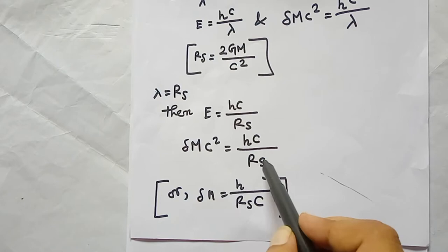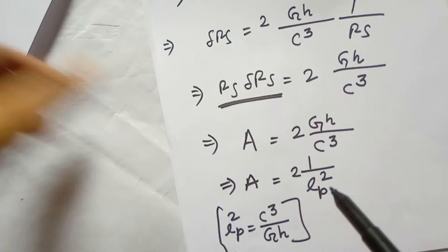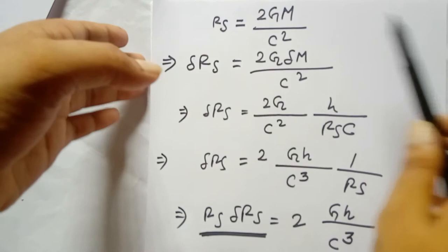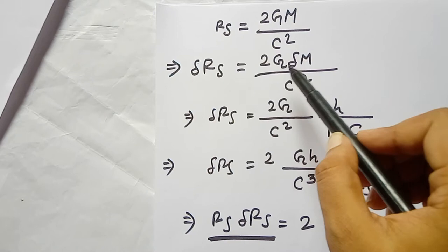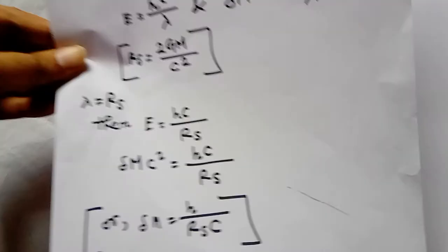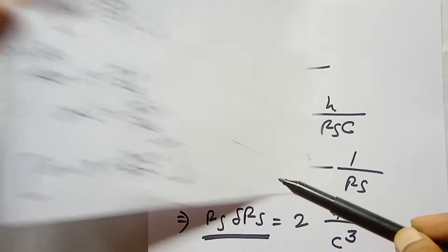We know rs equals 2GM divided by c squared. Differentiating that, we get delta rs equals 2G times delta m divided by c squared. We derived earlier that delta m equals h divided by (rs times c), so we substitute this value of delta m.